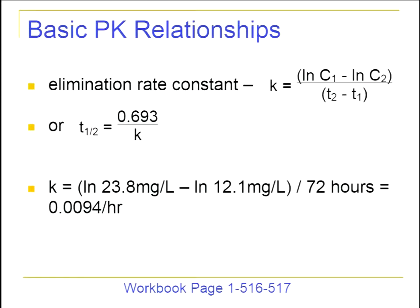Here's another equation you should remember: the elimination rate constant. K equals the natural log of concentration 1 minus the natural log of concentration 2, divided by the difference in time between those two concentrations. Or if you know the half-life, you can use: half-life equals 0.693 divided by K. In this case, we don't know the half-life in this specific patient, so K equals the natural log of 23.8 minus the natural log of 12.1, divided by 72 hours, giving K = 0.0094.